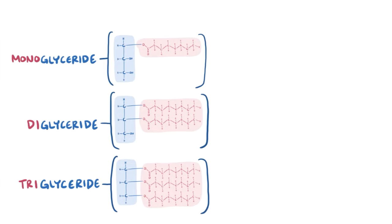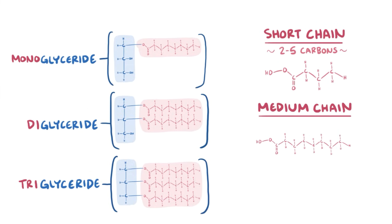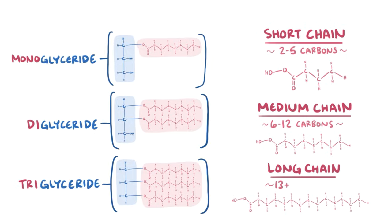There are various types of fatty acid chains, and one way to categorize them is by their length — in other words, how many carbons they have. Short chain fatty acids have 2-5 carbons, medium chain fatty acids have 6-12 carbons, and long chain fatty acids have 13 or more carbons.